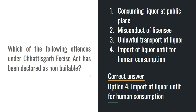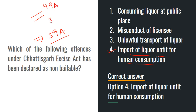Next: Which of the following offenses under the Chhattisgarh Excise Act has been declared non-bailable? The answer is option 4 — import of liquor unfit for human consumption. Section 59a lists the non-bailable offenses: offenses under Section 49a, and offenses under Section 34 subsection 1 clauses (a) and (b). Section 49a deals with import of liquor unfit for human consumption.